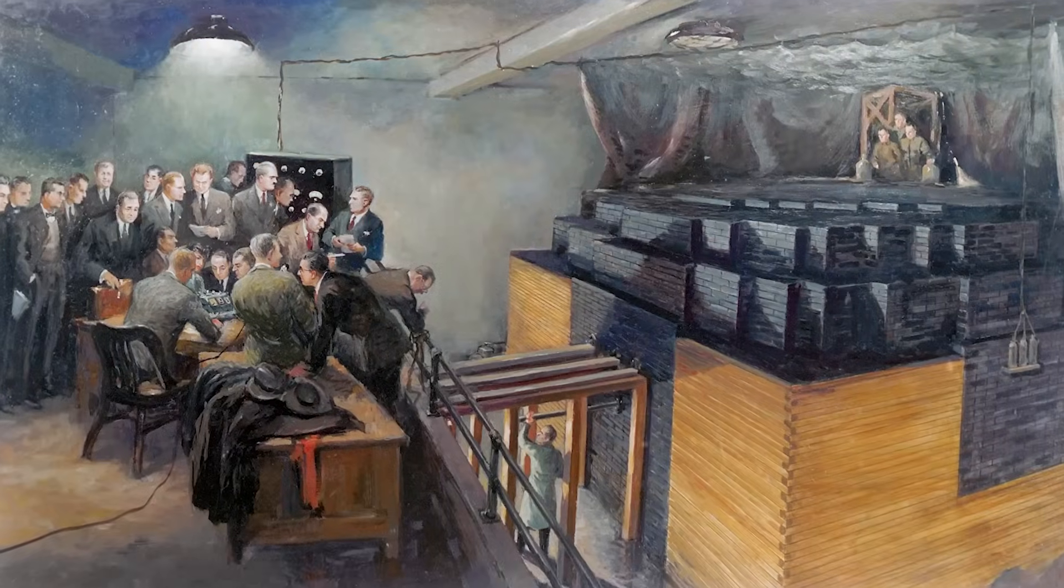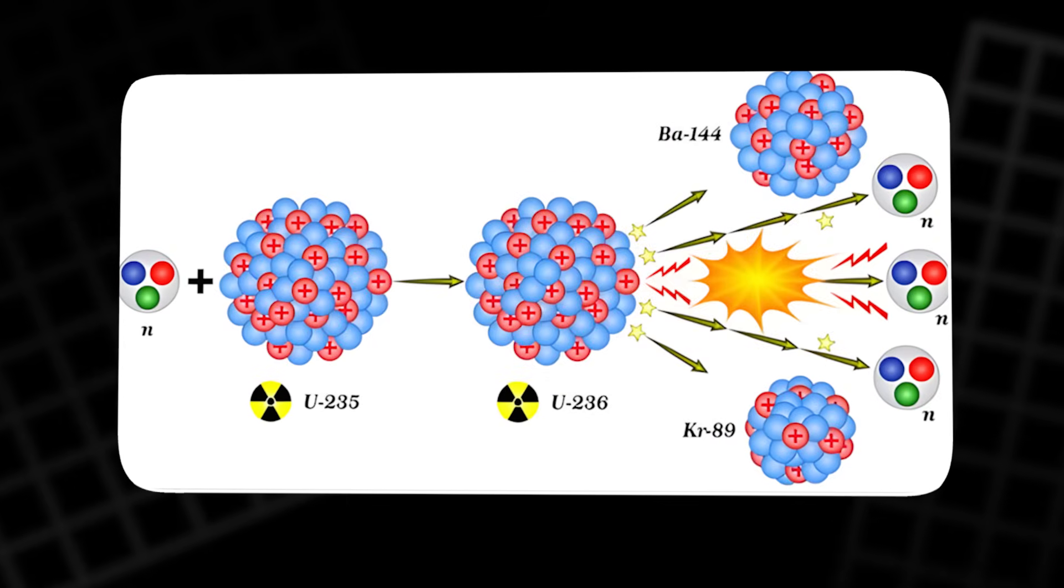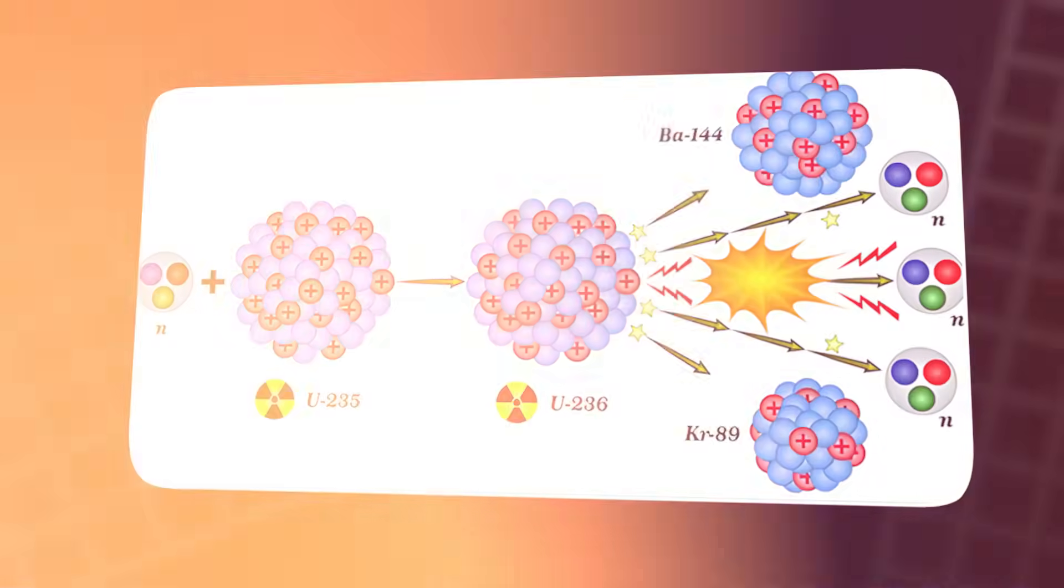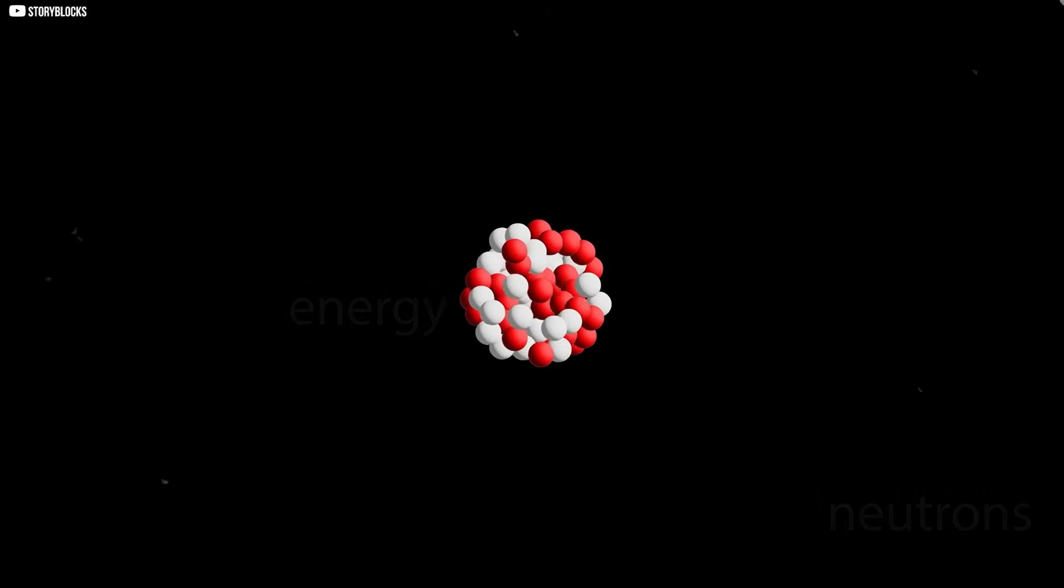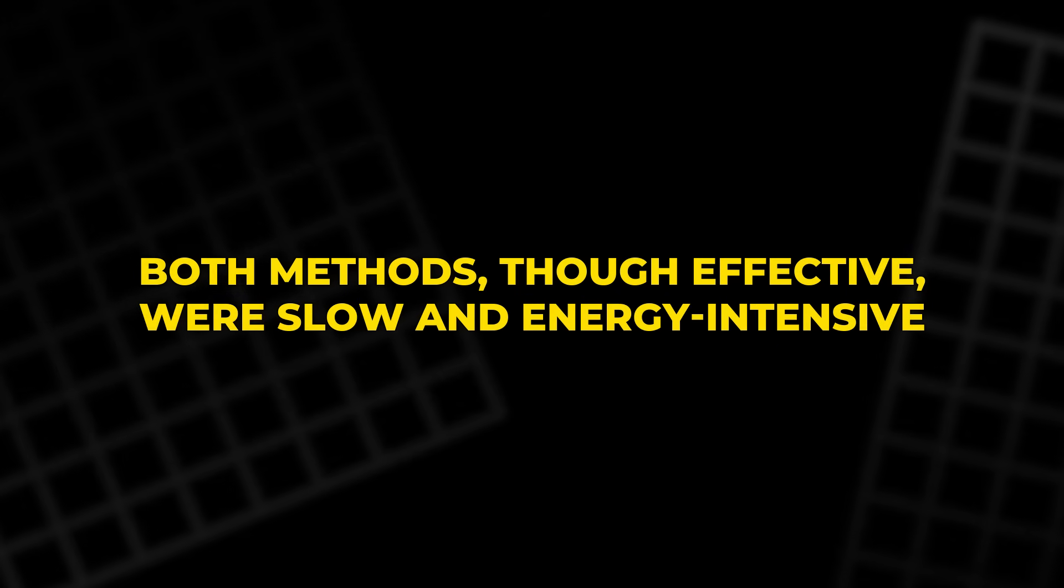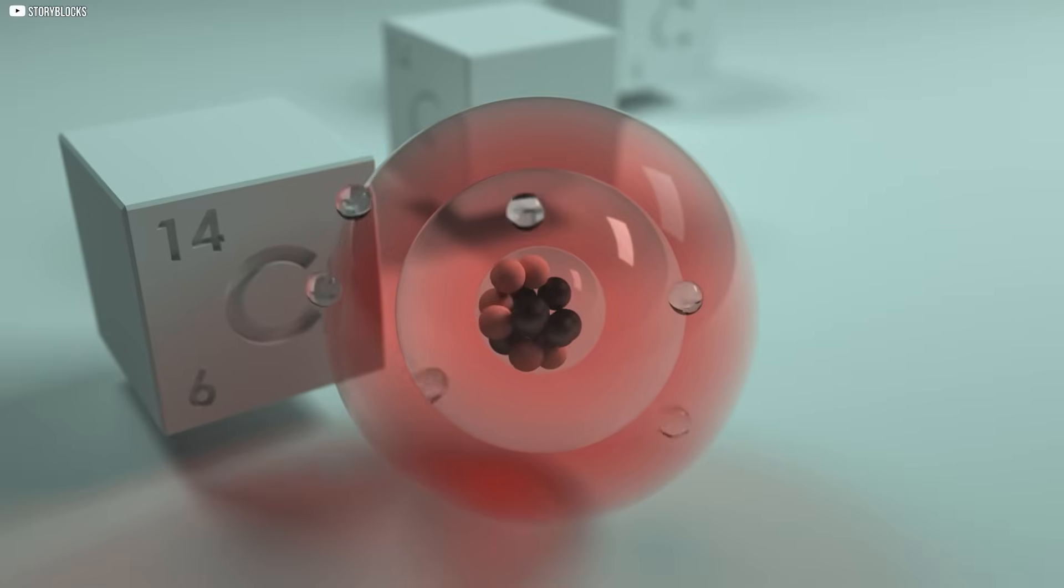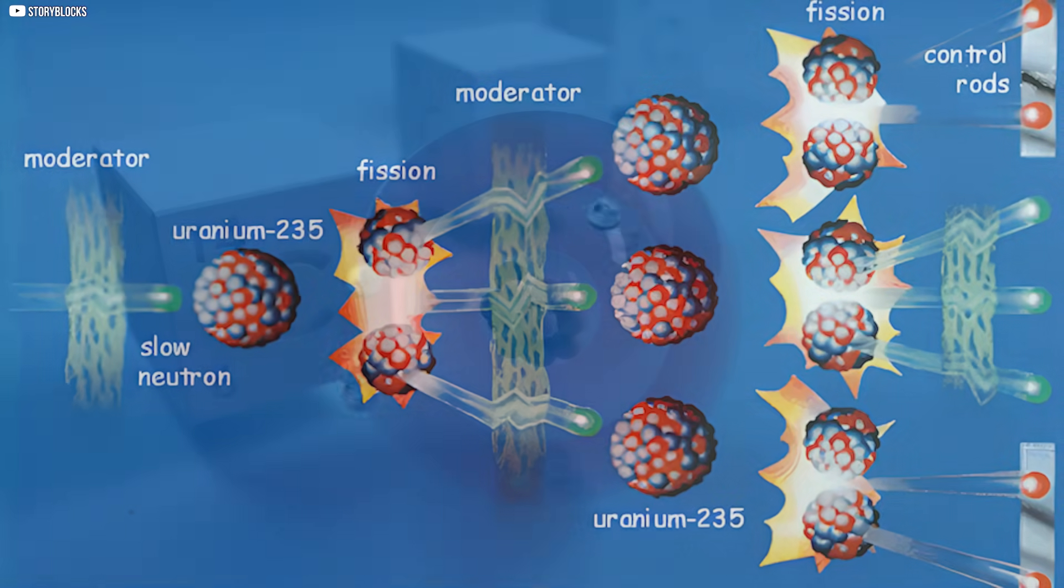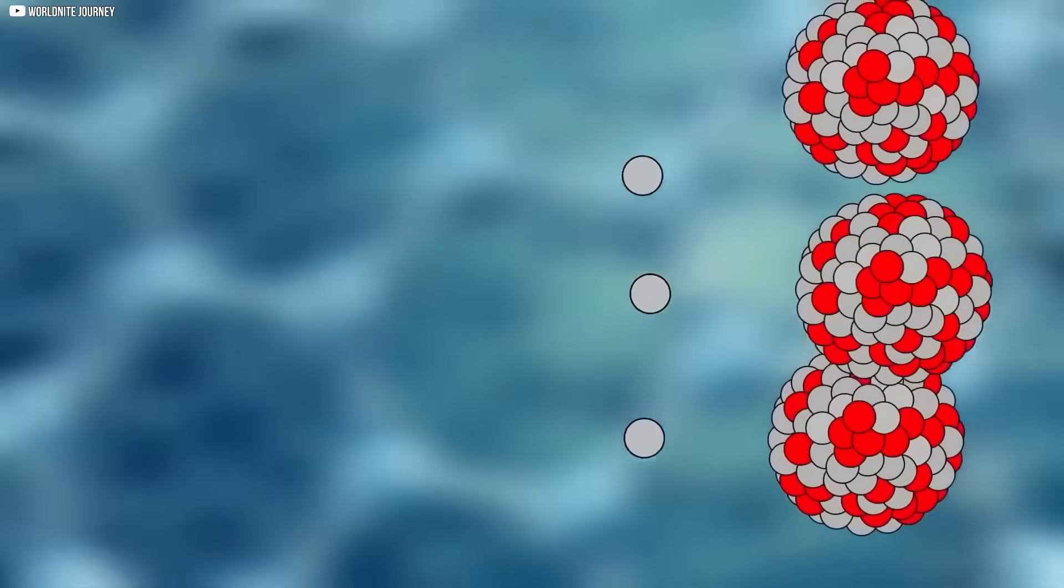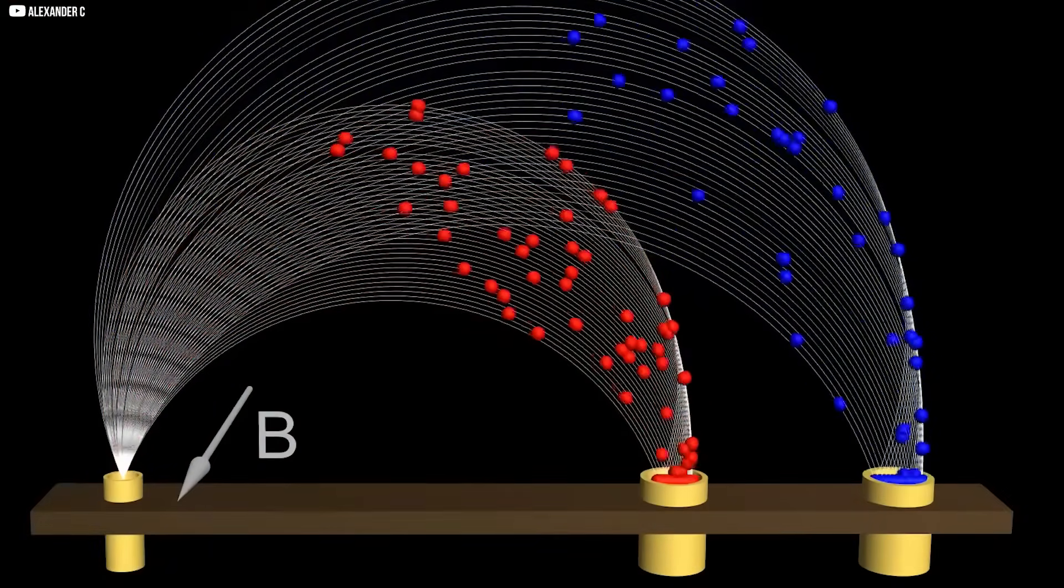Enrichment began to take shape during the Manhattan Project in World War II, where scientists developed methods to separate uranium-235 from uranium-238. Two primary techniques were used: gaseous diffusion and electromagnetic separation. Both methods, though effective, were slow and energy-intensive. Gaseous diffusion relied on porous membranes to separate uranium hexafluoride gas into its isotopes, while electromagnetic separation used magnetic fields to divert the isotopes based on their masses.